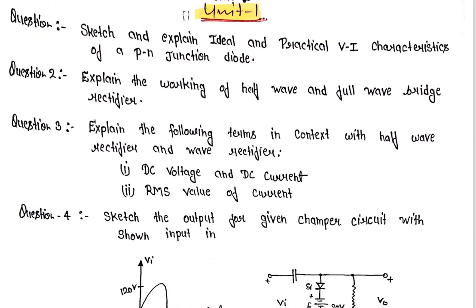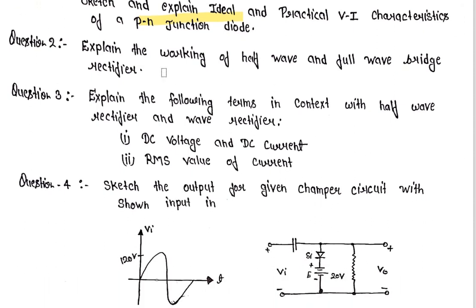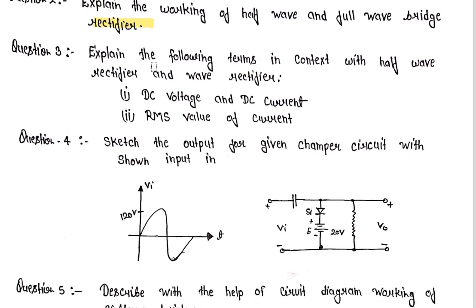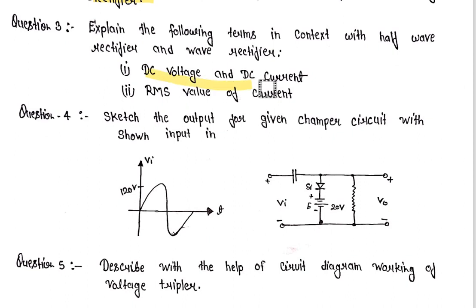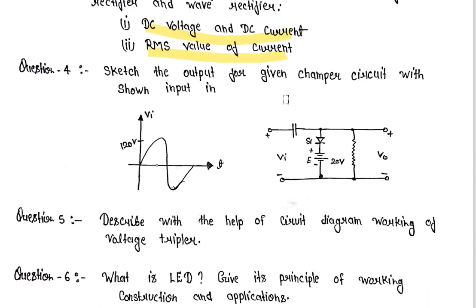VG questions from Unit 1: you should see characteristics of PN junction diode. After that, see half wave and full wave working from Unit number one. Important terms to study: DC voltage, DC current, RMS value of current, and key terms of half wave rectifier and full wave rectifier.